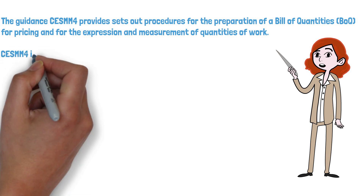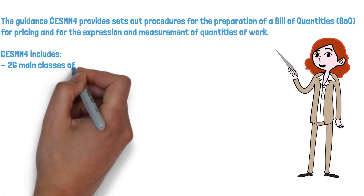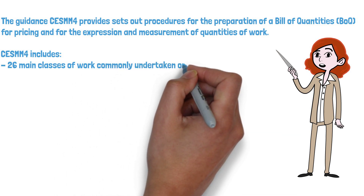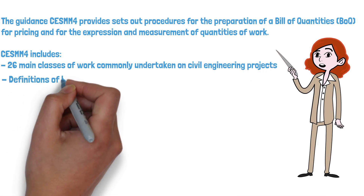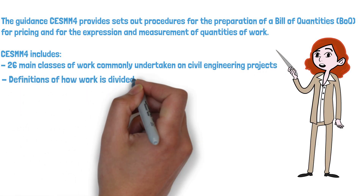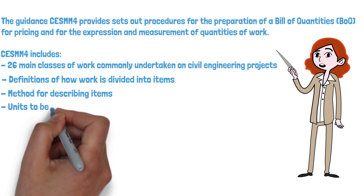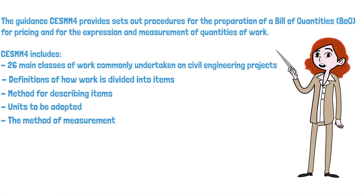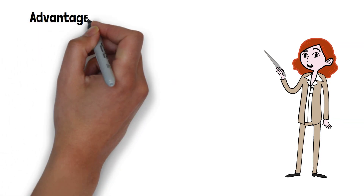The classification system in CESMM includes 26 main classes of work commonly undertaken on civil engineering projects, and includes definitions of how work is divided into items, the method for describing items, the units to be adopted, and the method of measurement. These are all extremely useful tools for quantity surveyors and construction professionals during the takeoff and tender process.